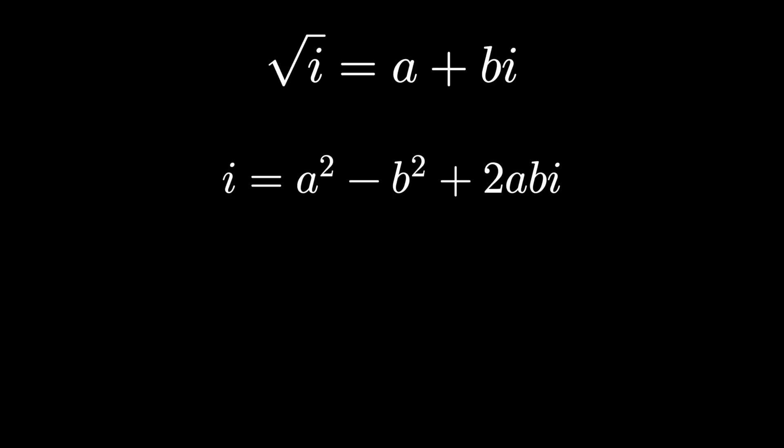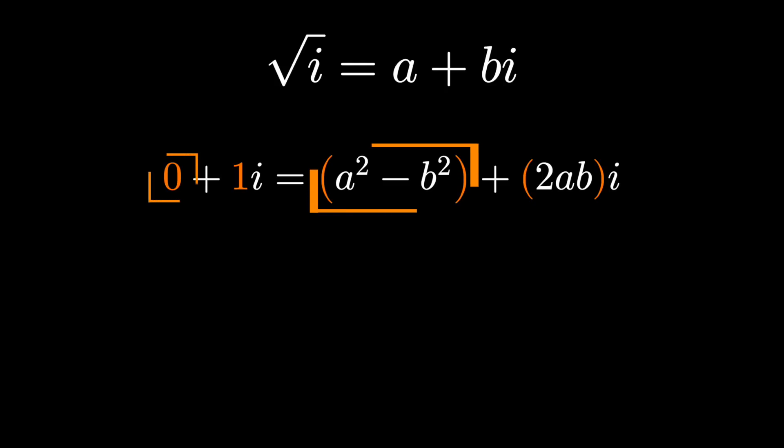So i is a squared minus b squared plus 2ab i. And for emphasis, I'm going to write the left-hand side as 0 plus 1i. Why do this? Well, this is sometimes called matching coefficients.